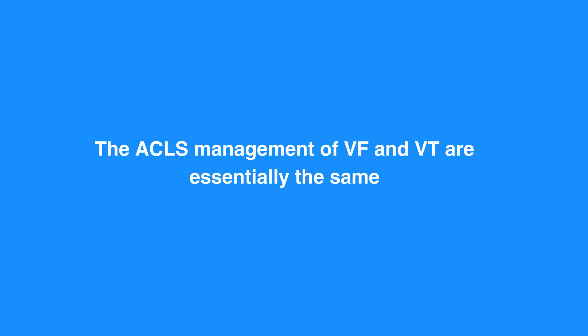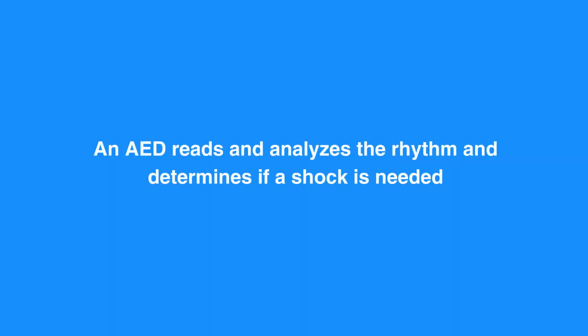VF and VT are treated essentially the same. Resuscitation starts with a BLS survey. An AED reads and analyzes the rhythm and determines if a shock is needed. The AED is programmed to only prompt the user to shock VF and VT rhythms, but the machine does not know if the individual has a pulse or not. This is the primary reason you should not use an AED on someone with a palpable pulse.